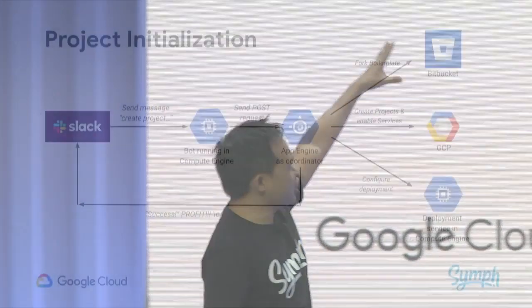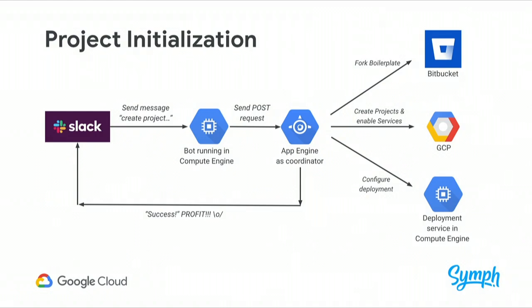Let's just imagine it works. When we type a command in Slack — create project — it sends a message to our bot, a Slack bot. It then sends a POST request to our App Engine app, which acts as a coordinator. First, it forks the boilerplate in Bitbucket. Then it creates a project and enables services like Vision API, DataStore API — the APIs that we commonly use. And then it configures a deployment for our deployment service that's also running on Compute Engine via a custom script.